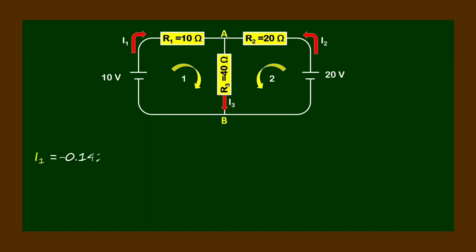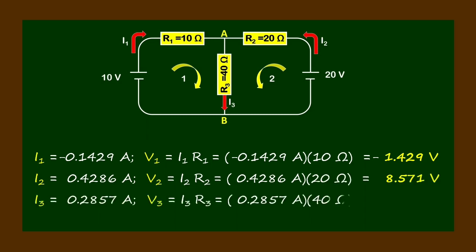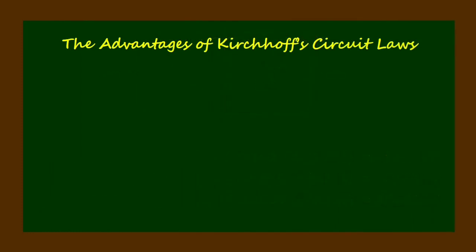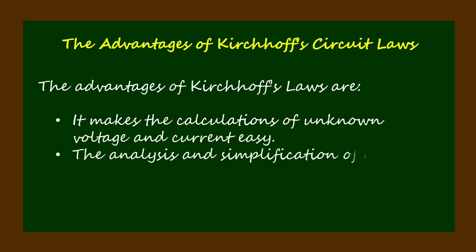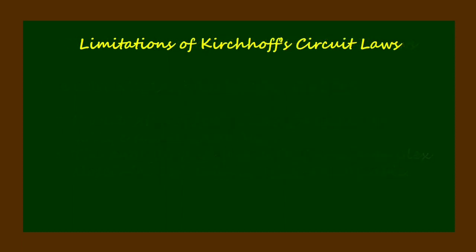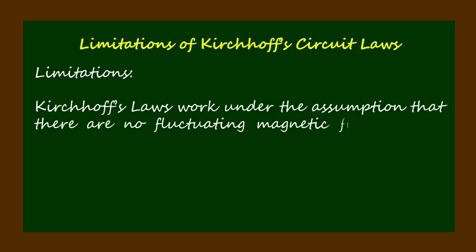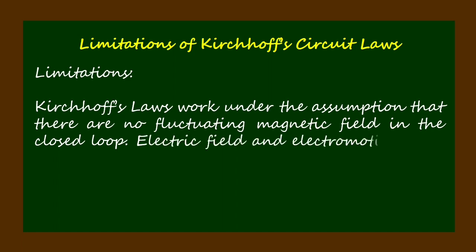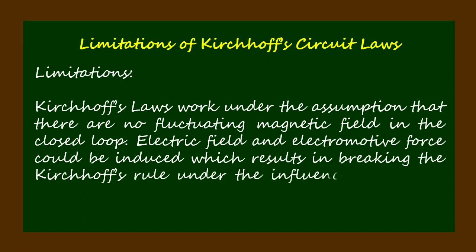From the application of Kirchhoff's current laws, here are the magnitudes of current and the voltage drops in each of the resistors in the given circuit. The advantages of Kirchhoff's laws are that they make calculations of unknown voltage and current easy, and the analysis and simplification of complex closed-loop circuits becomes manageable. Limitations: Kirchhoff's laws work under the assumption that there are no fluctuating magnetic fields in the closed loop; electric field and EMF could be induced, which results in breaking Kirchhoff's rule under the influence of varying magnetic fields.